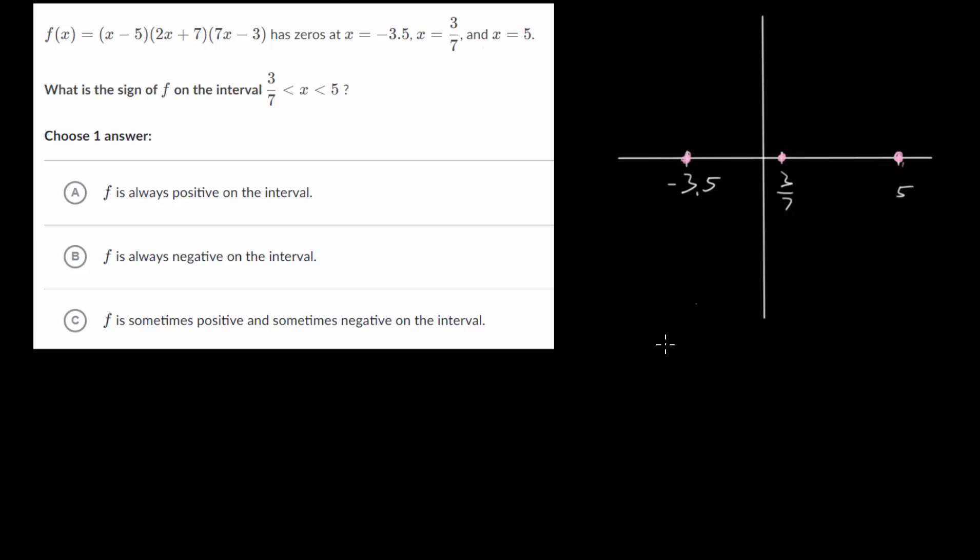This is when the function is equal to zero. What we'll learn in a later video is that it's going to come up from below, come down through 3/7, and then go back up through 5.